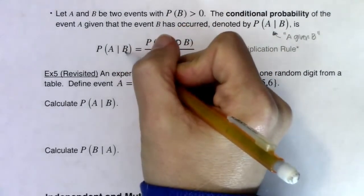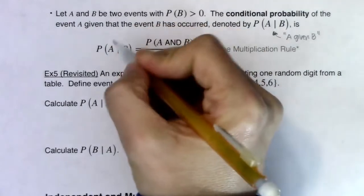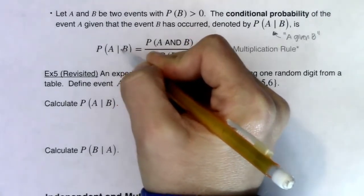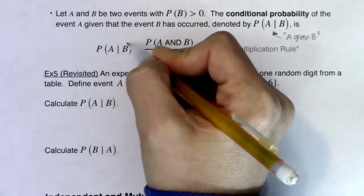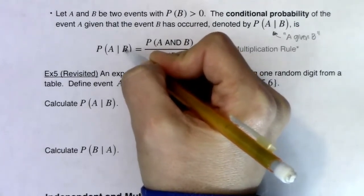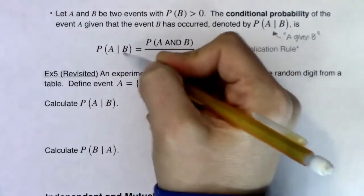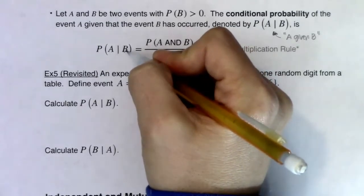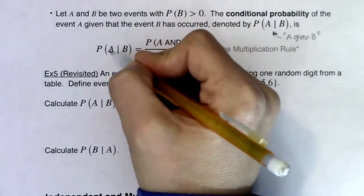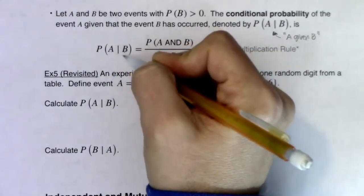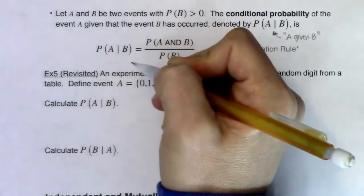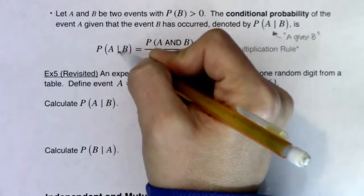In terms of what 'A given B' means — this could be: what is the probability that you are a STEM major, given you are female? Or the other way around: what's the probability that you are female, given you are a STEM major? The event that comes after the vertical bar has already happened; it's not up for question. Event B happened. Given event B happened, what's the likelihood that A will also happen?